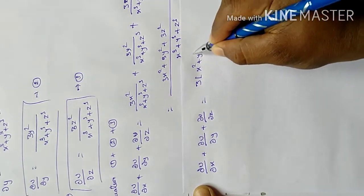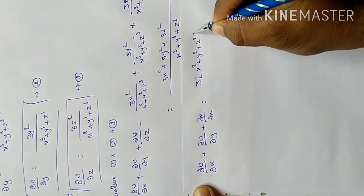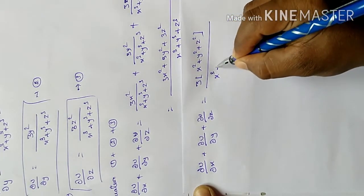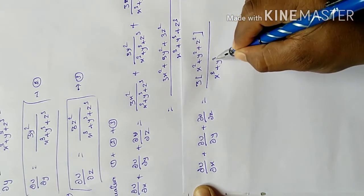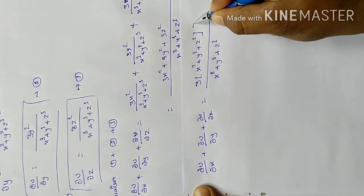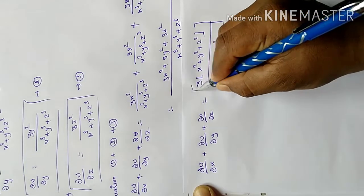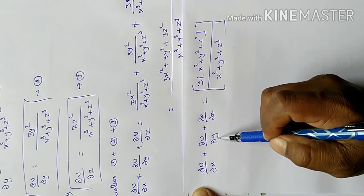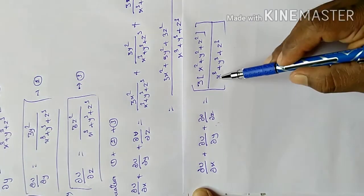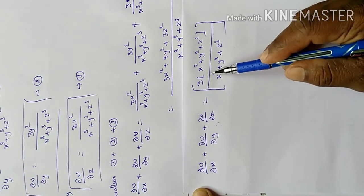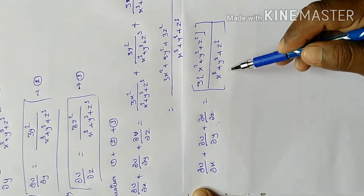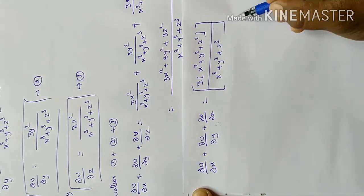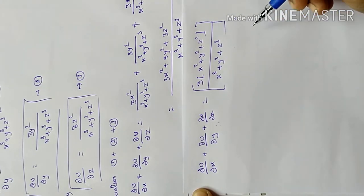Therefore, ∂u/∂x plus ∂u/∂y plus ∂u/∂z equals 3 into (x squared plus y squared plus z squared) divided by (x power 3 plus y power 3 plus z power 3). That is, hence proved.